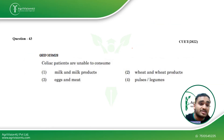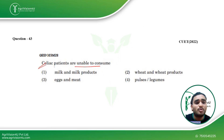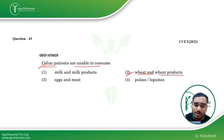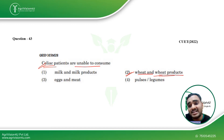Coming to the next question: celiac patients are unable to consume — the name 'celiac disease' is related to gluten, so wheat products is the right answer. People who have celiac disease, gluten intolerance, or gluten allergy are not able to consume wheat and wheat products, and it is advised for them to consume products made from alternate sources of protein.